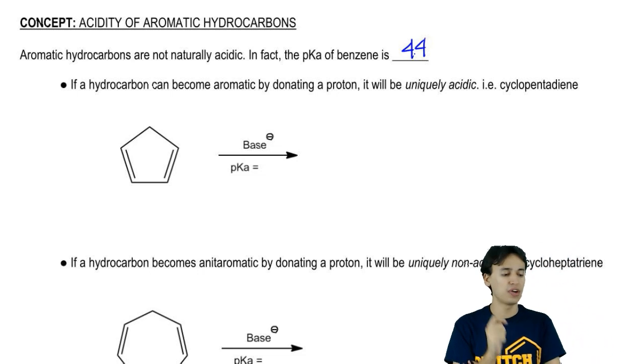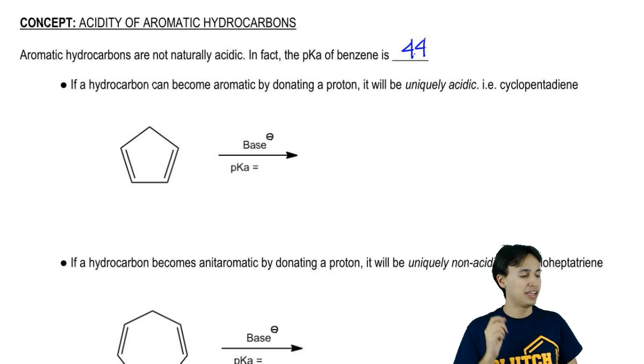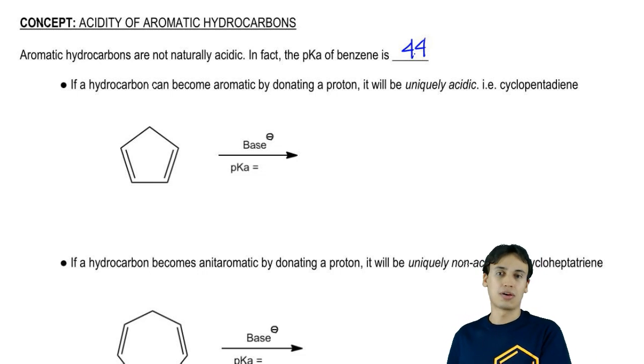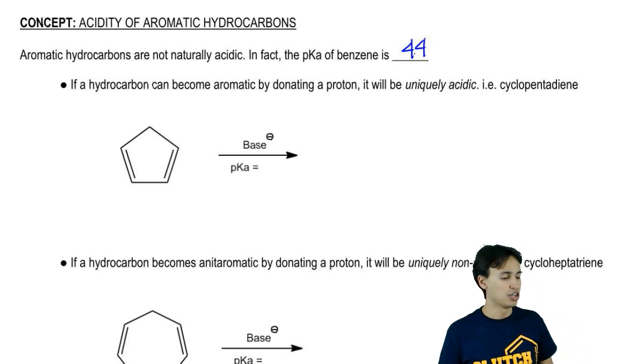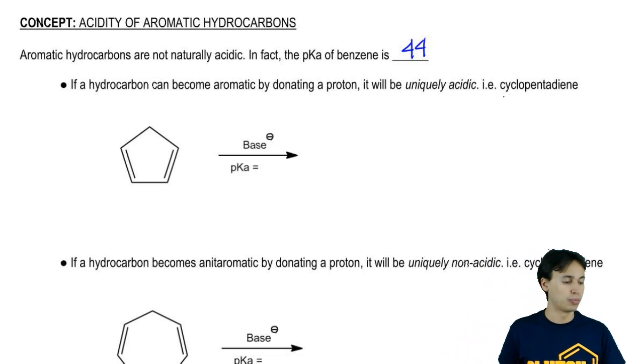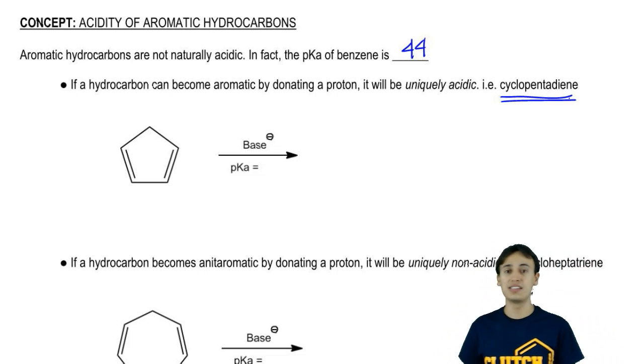But what we do find is that if a hydrocarbon can become aromatic by giving away a proton, basically being an acid, donating a proton, if that makes it become aromatic because it's becoming a conjugate base, then it's going to be uniquely acidic. So our stereotypical example here is cyclopentadiene. Cyclopentadiene is a hydrocarbon. You would expect it to have pKa's of 44, something around there.